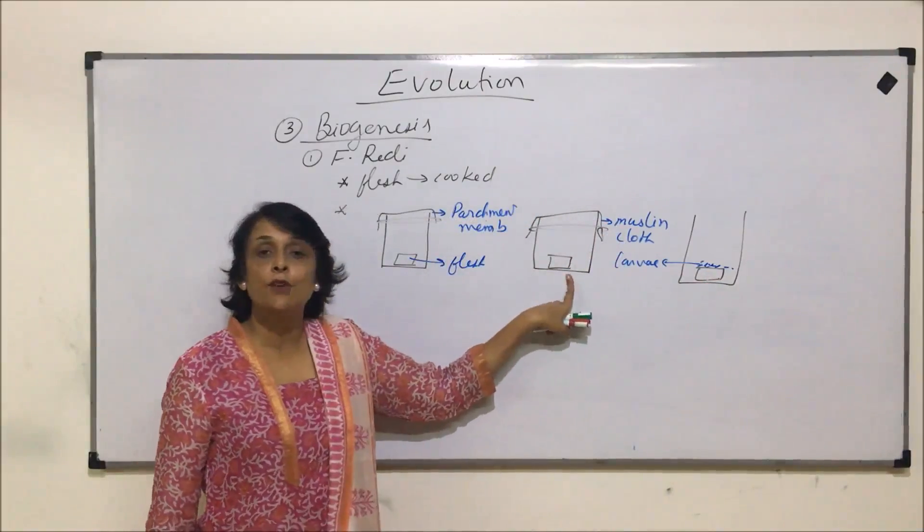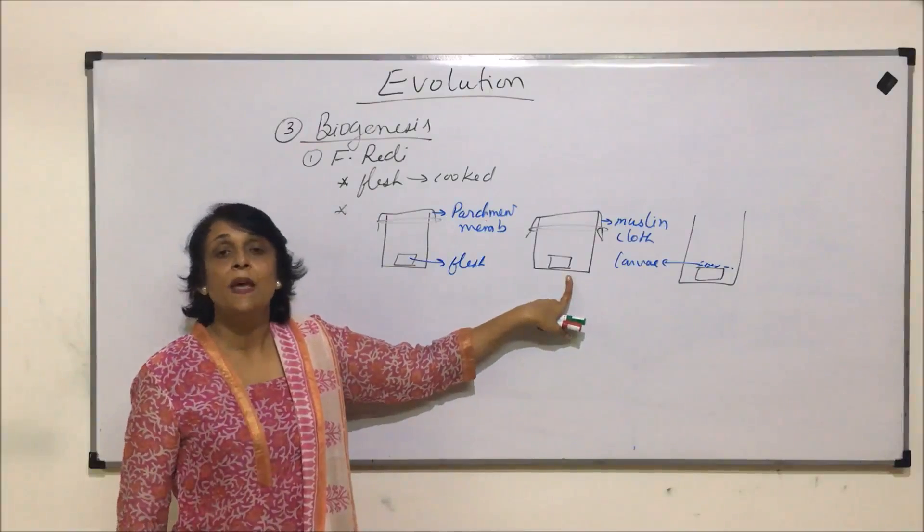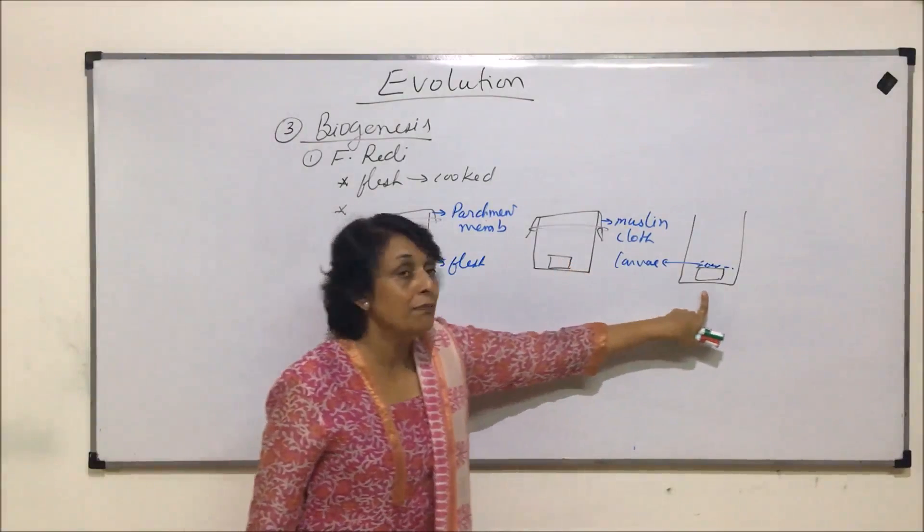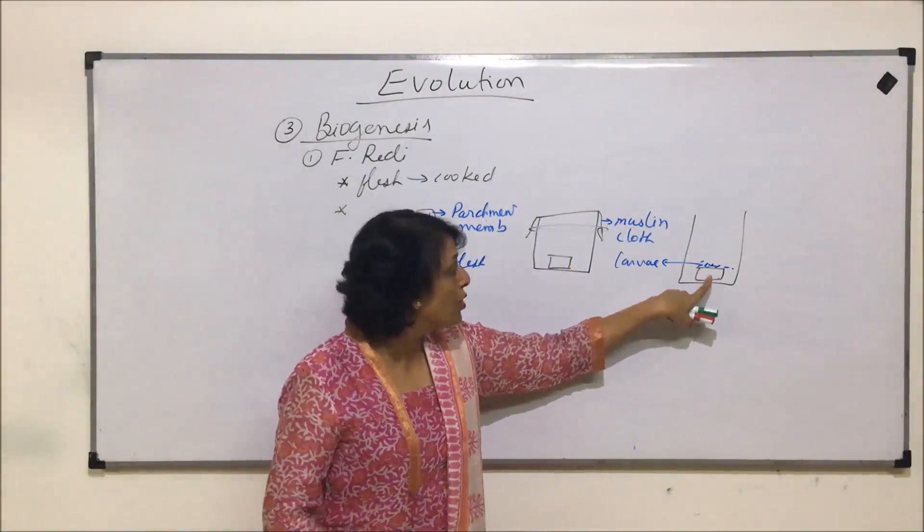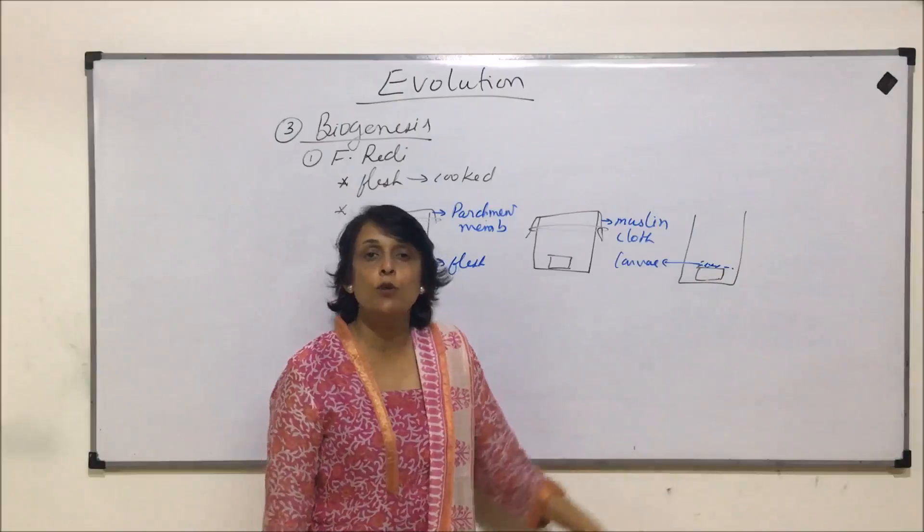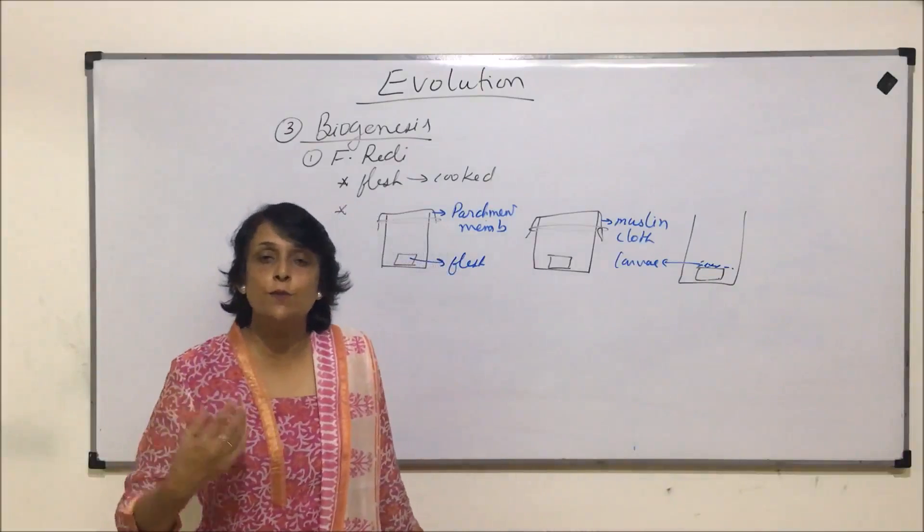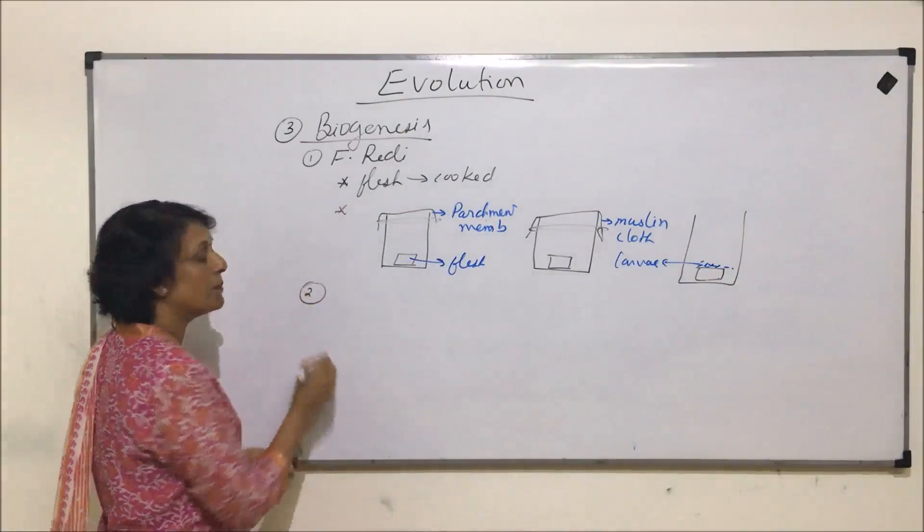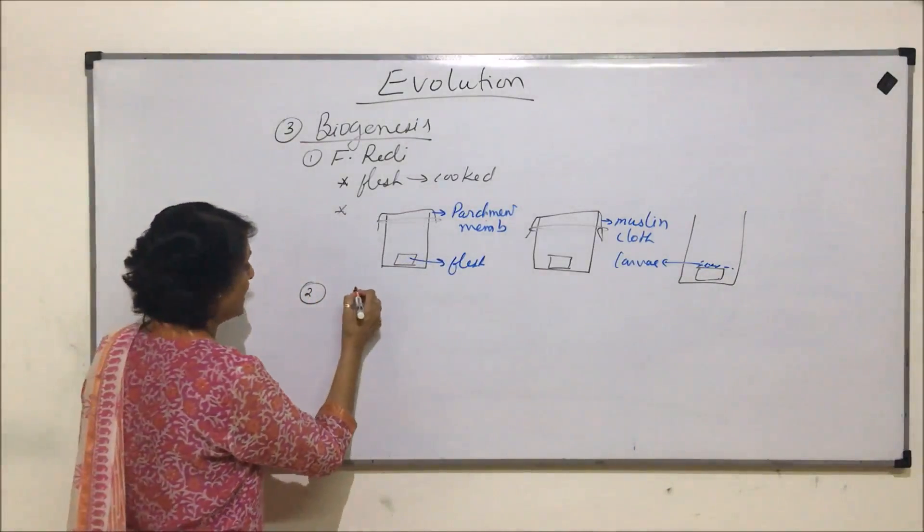The conclusion which was drawn was that the house flies who came here or visited this piece laid their eggs on this meat piece, and that's how the maggot or the larva was seen on this. The flies came closer to these two jars, but they were not able to reach to that piece, and that is why they were not able to lay their eggs here. That means the life which originated on this piece was actually coming from the flies which were already existing.